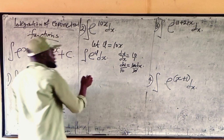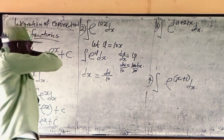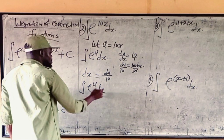Therefore, dx will be equal to du over 10. So actually dx means du over 10. Anywhere you see dx becomes du over 10. We have the integral exponential u du over 10.